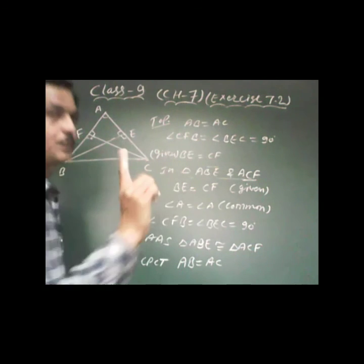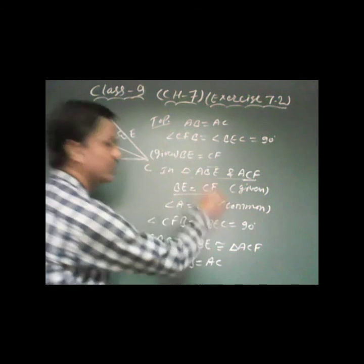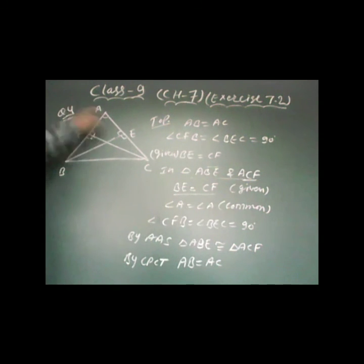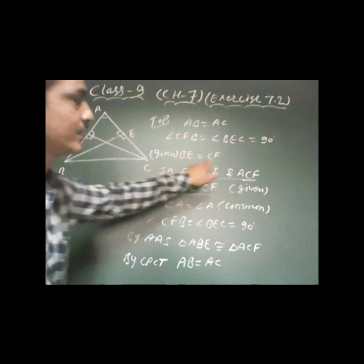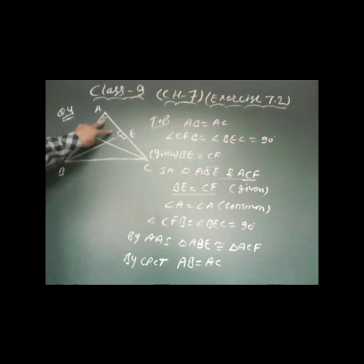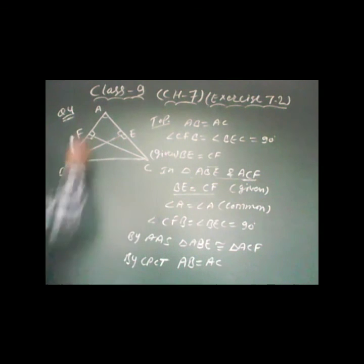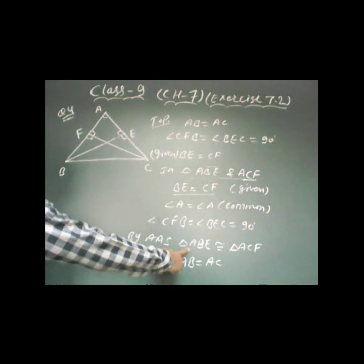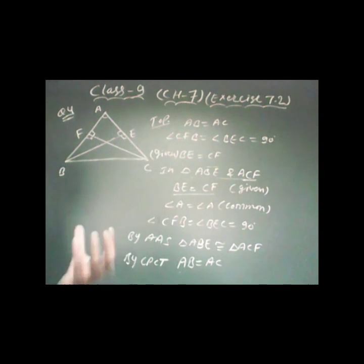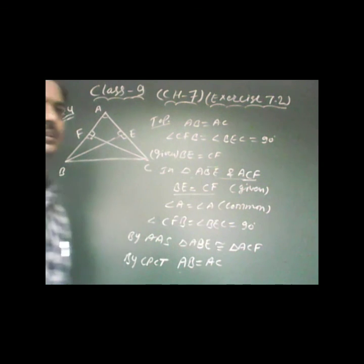In question 4, only one corresponding part changes: instead of AB equal to AC being given, BD equal to CF is given. Angle A is still common and the right angles are still 90 degrees. So by AAS congruence, the triangles are congruent, and by CPCT, AB is equal to AC. Students, in this diagram we need to pick the appropriate corresponding parts equal and then we can easily prove the two triangles congruent.